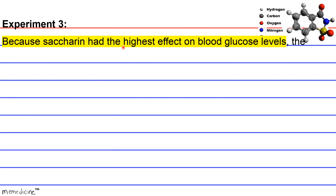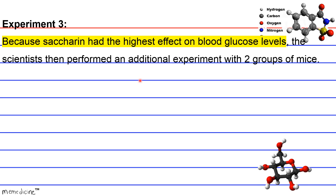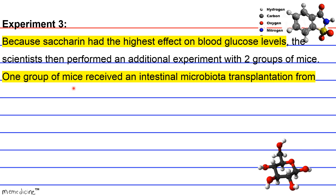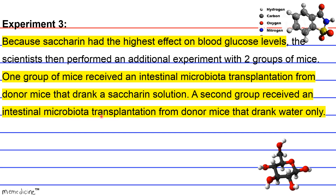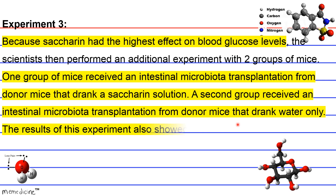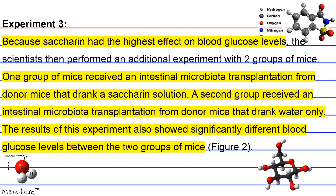Experiment 3. Because saccharin had the highest effect on blood glucose levels, scientists performed an additional experiment with two groups of mice. One group received an intestinal microbiota transplantation from donor mice that drank a saccharin solution. A second group received an intestinal microbiota transplantation from donor mice that drank water only. The results showed significantly different blood glucose levels between the two groups.